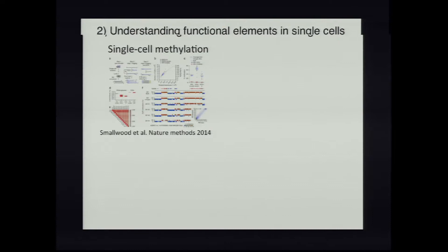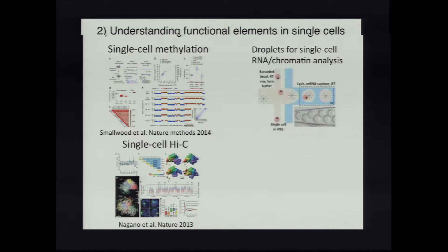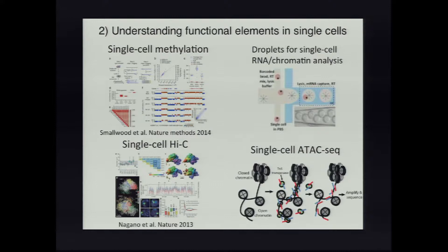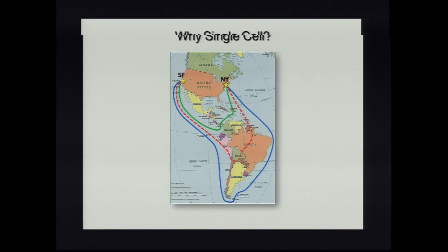Number two: understanding functional elements in single cells. There are methods like single-cell methylation, single-cell Hi-C, techniques for doing droplets with RNA or chromatin analysis. We've been working on single-cell ATAC-Seq, a method for looking at open chromatin regions on small numbers of cells. Why single cells? Here's my mapping analogy: if you want to look at all boats going from San Francisco to New York, they can either go through the Panama Canal or around Tierra del Fuego. The average boat, though, goes through the middle of Brazil — which never happens. That's all of our bulk data, effectively.